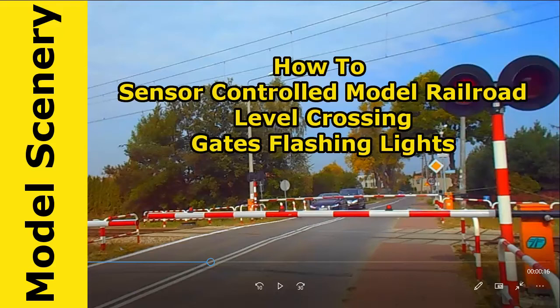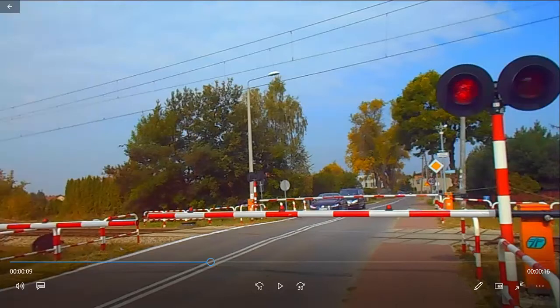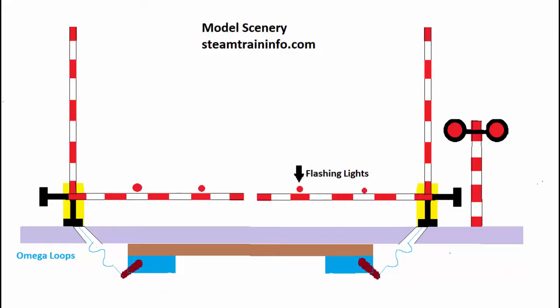We're going to build a level crossing just like this prototype. The prototype I go across quite often and I really like it. We're going to build a level crossing with flashing lights, gates servo controlled, and they'll operate slowly.